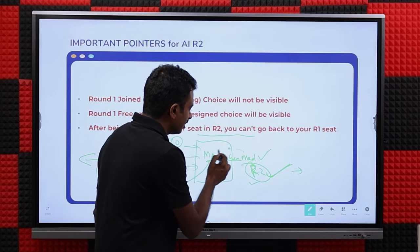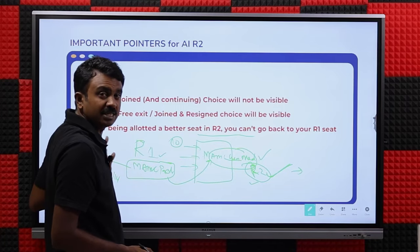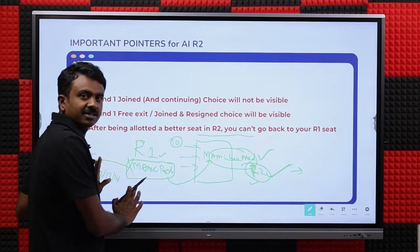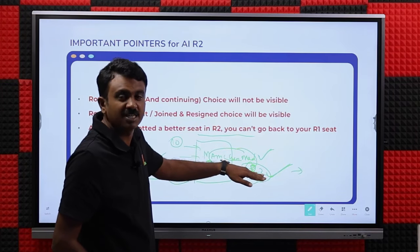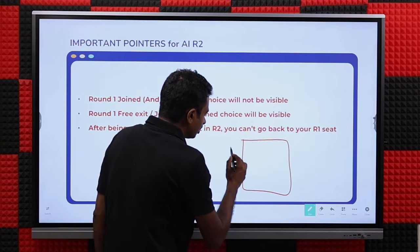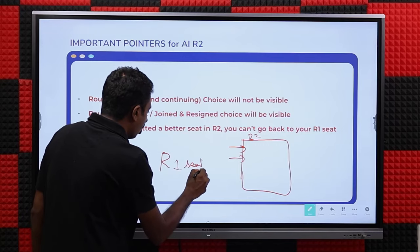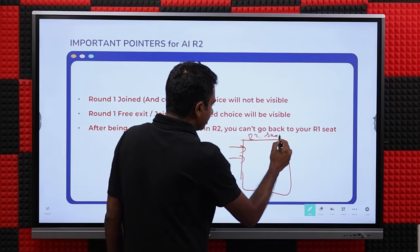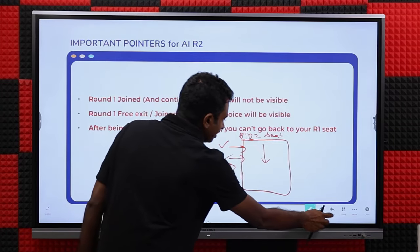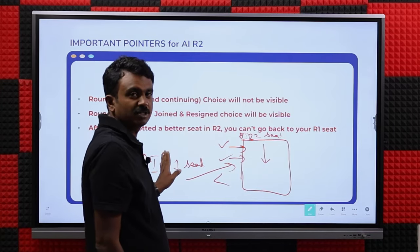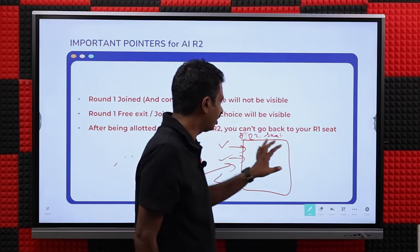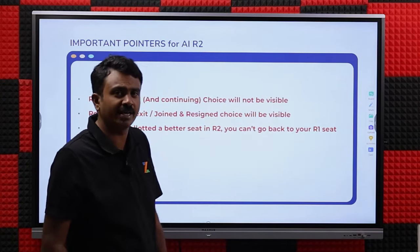Your only option will be the R2 seat. You cannot go back after Round 2 and say you don't like this seat and want to return to your R1 seat — somebody else would have been allotted that. Even if no one was allotted MAMC Paediatrics, you still cannot go back. You have only one seat allotment. That seat will lie vacant and you cannot claim it. You will have only the General Medicine seat you got in Round 2.